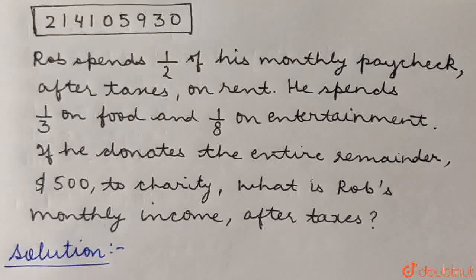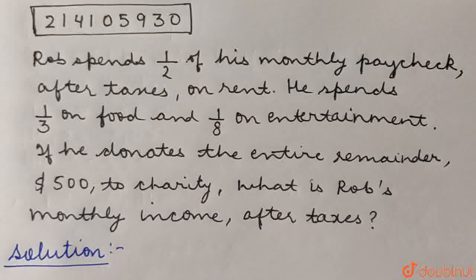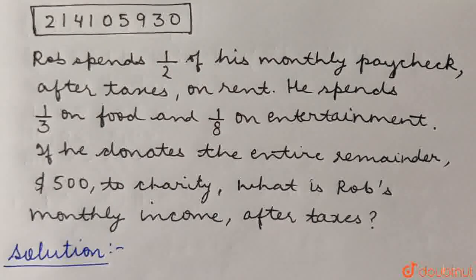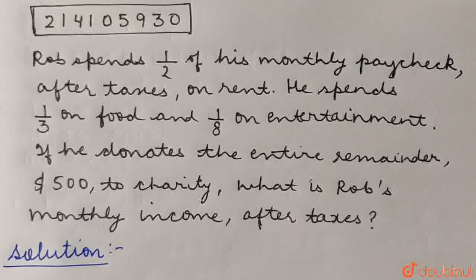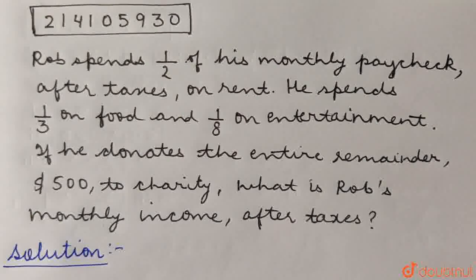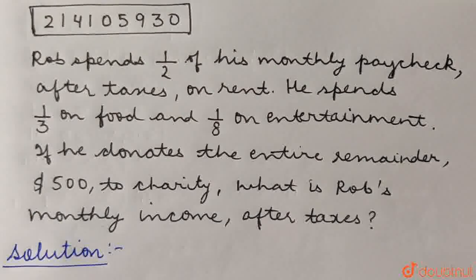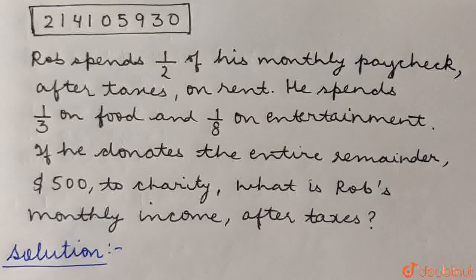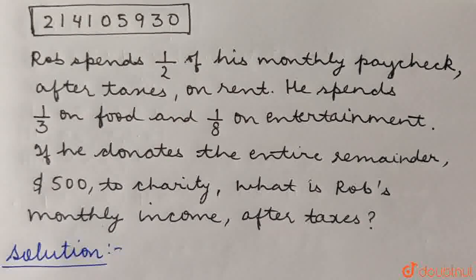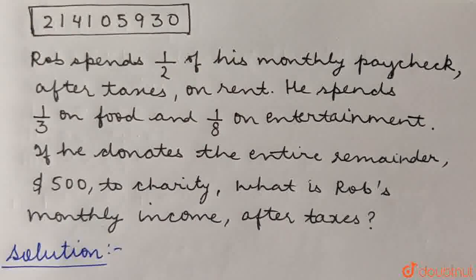Rob spends half of his monthly paycheck after taxes on rent. He spends 1 by 3 on food and 1 by 8 on entertainment. If he donates the entire remainder $500 to charity, what is Rob's monthly income after taxes?